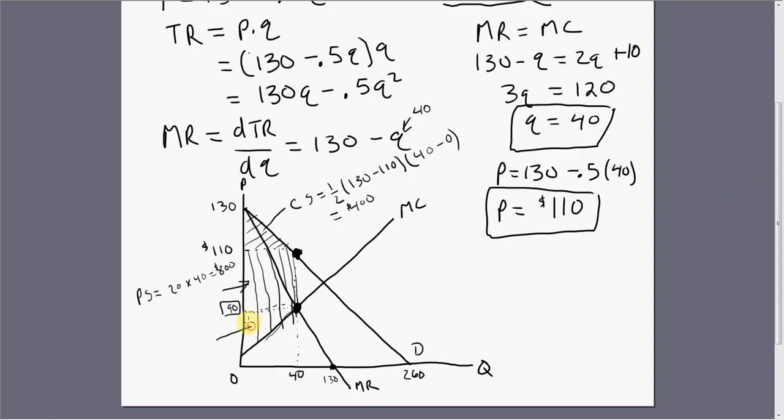Producer surplus is also this bottom triangle, the difference between 90 and the marginal cost curve. And we're going to need one more value there. That's 10, and that's just the vertical intercept of the marginal cost equation.